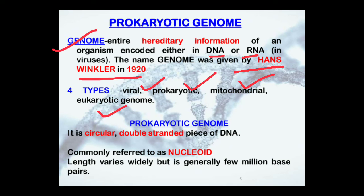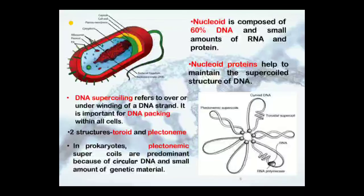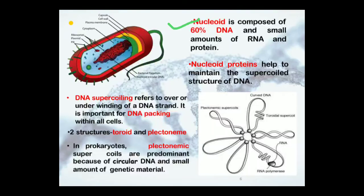For the prokaryotic genome, we can see that it is circular — it is a double-stranded piece of DNA. It is also referred to as the nucleoid and the length varies widely, but is generally a few million base pairs. The nucleoid is composed of 60% DNA and some small amounts of RNA and protein.